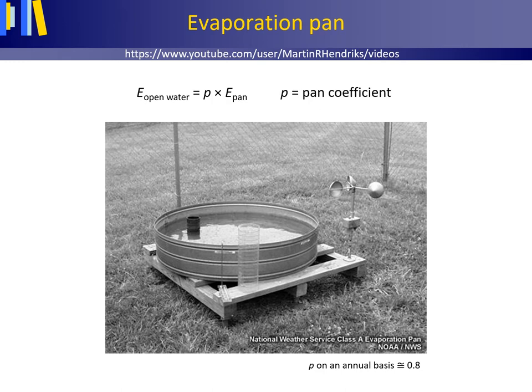The photo shown is a photo of the US Class A evaporation pan. Other well-known evaporation pans are the Colorado sunken pan, which is a square pan sunk into the ground, or the US Geological Survey floating pan, which is a pan that floats on the water. The pan coefficient p on an annual basis for these evaporation pans is approximately 0.8.